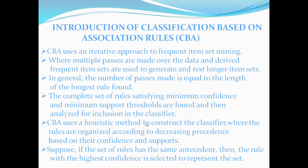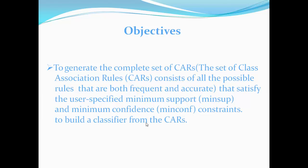It uses a heuristic method. That is, the set of rules has the same antecedent, then the rule with the highest confidence is selected to represent the set. Objectives: to generate the complete set of CARS. CARS is the class of association rules. Consists of all the possible rules that are frequent and accurate that satisfy user specified minimum support and confidence constraints.